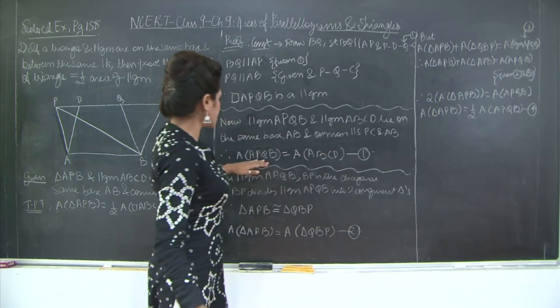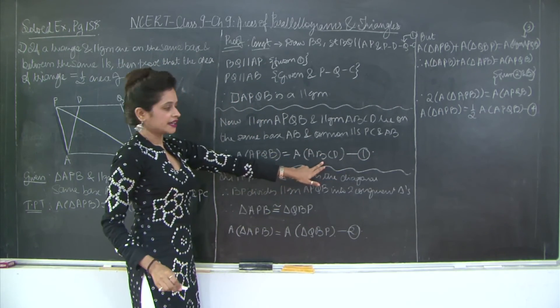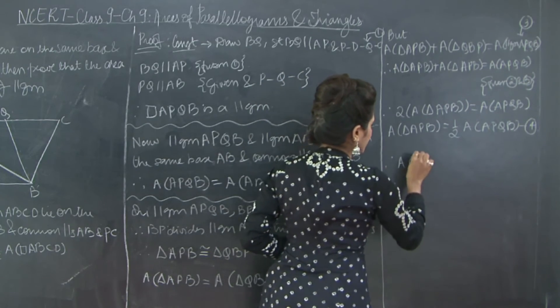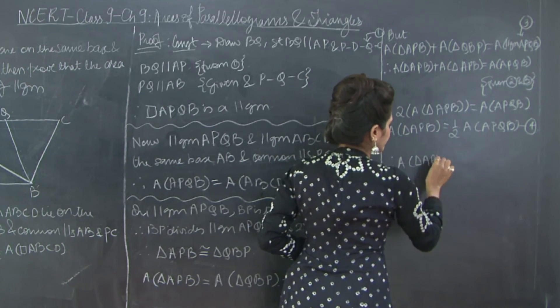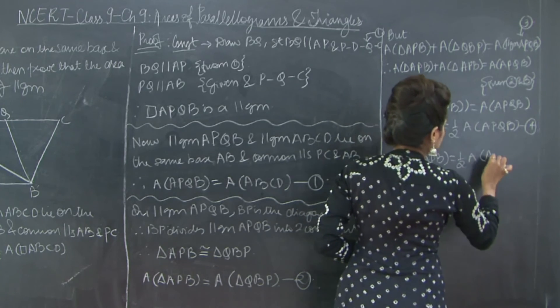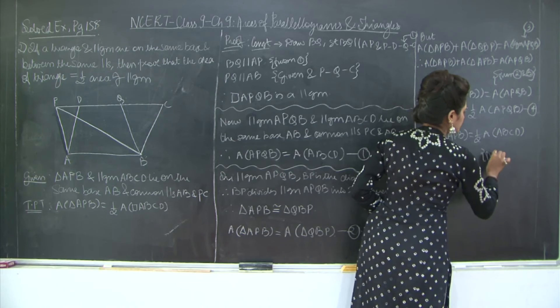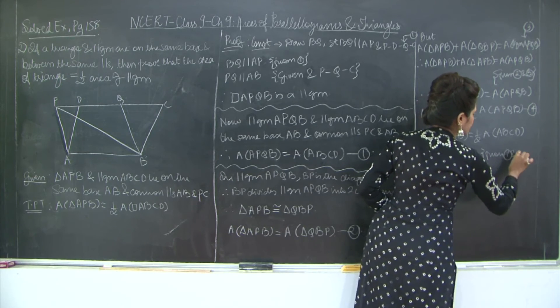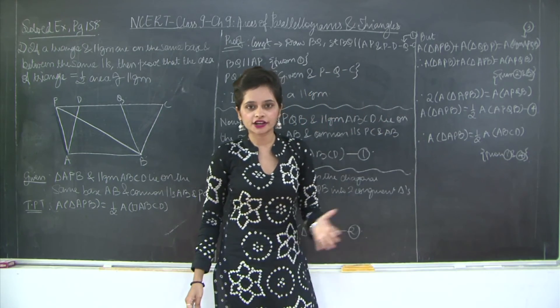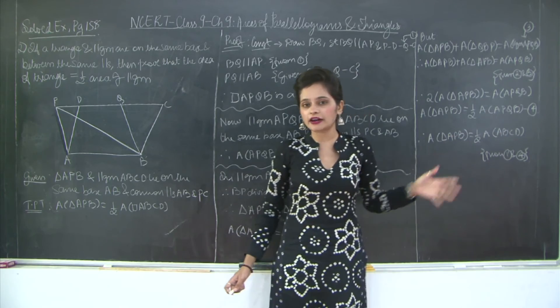Now if you take a look at equations 1 and 4, instead of APQB I can write ABCD. Therefore, area of triangle APB is equal to half area of ABCD. This is what we needed to prove, that area of triangle APB is equal to half area of quadrilateral, your parallelogram ABCD.